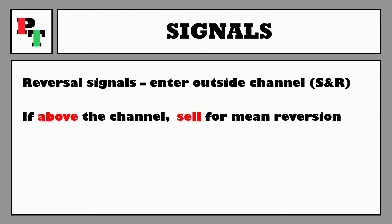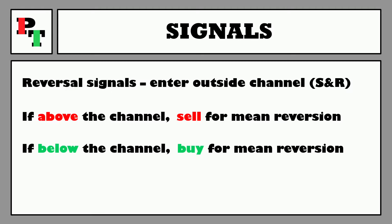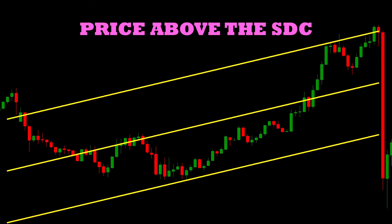That means if price finds its way above the channel, that could indicate the potential for a decent sell trade as price has allegedly become overbought. Looking to see price get back towards the centreline with that trade, then switch it around for if price gets below the channel. The suggestion is that price is oversold and therefore you might want to enter a buy trade to try and feast on some of that savoury mean reversion. Here's a prime example where we wait patiently with our channel for price to close outside of it, which we do get up in the top right corner — just in time for the big drop over the next couple of periods, where we would of course take some excellent profits.